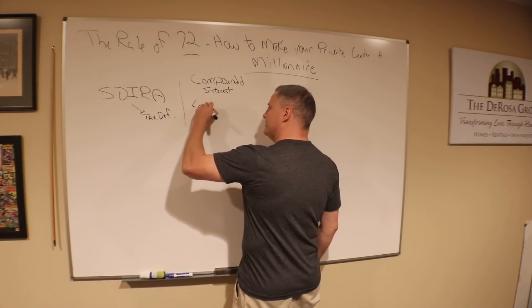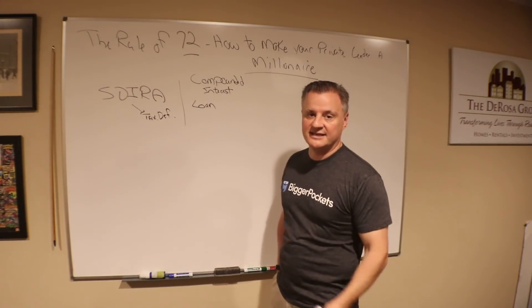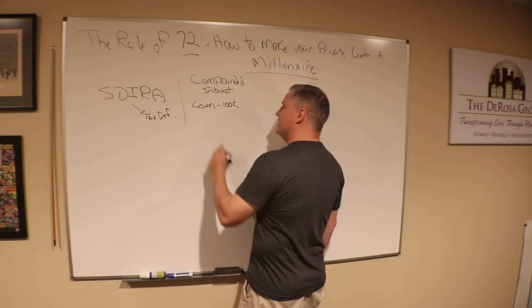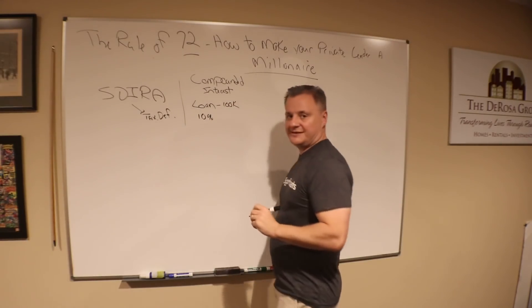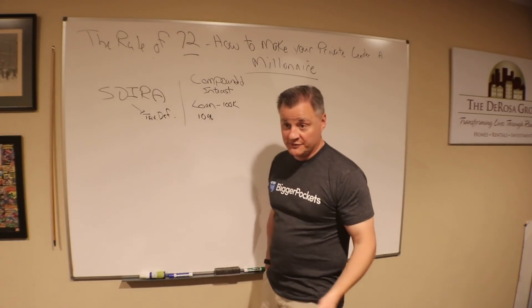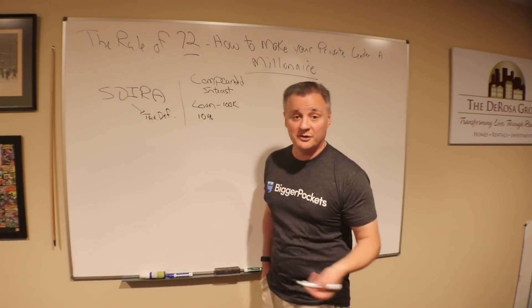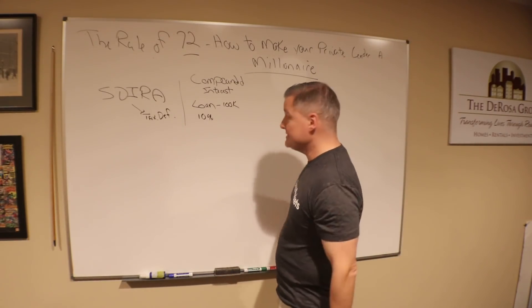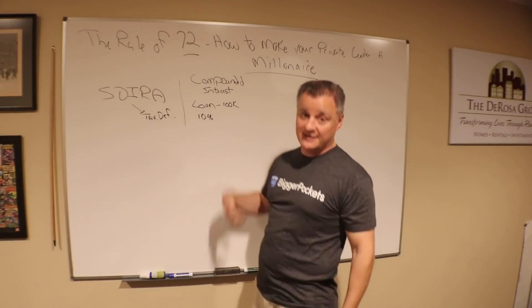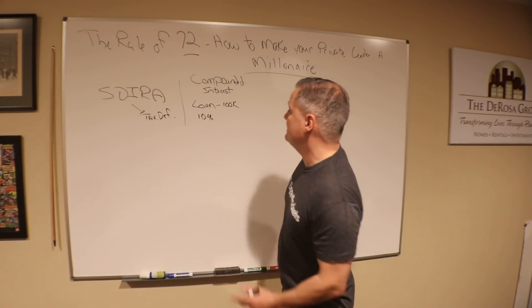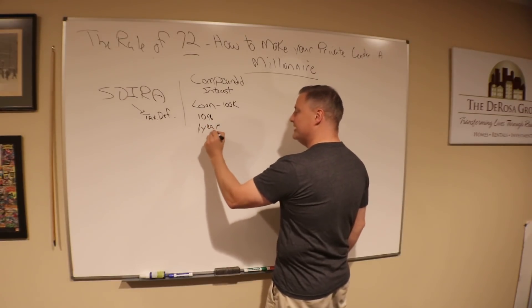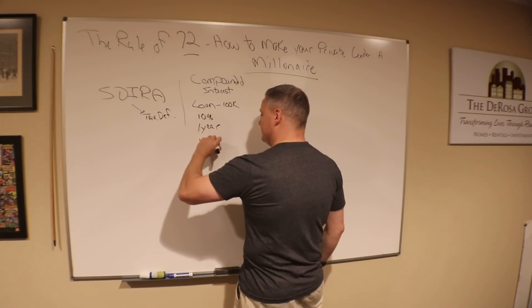Compound interest works like this. Let's say you have a self-directed IRA loan on a piece of real estate and a private money lender invested in that deal. Let's say that loan is for $100K and you're paying a 10% interest rate. The loan's for exactly one year. For simplicity of these calculations, you need to run with me on that, but I get that deals are not exactly one year.